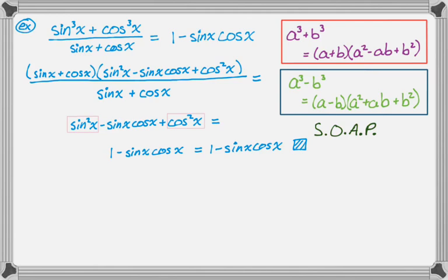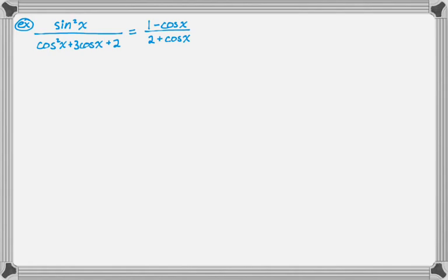Let's look at another one. Here we have sine² over (cosine² + 3·cosine + 2) is equal to (1 − cosine) over (2 + cosine). The left-hand side is way more complicated. You'll find if you're looking in a textbook, the left-hand side is almost always more complicated.